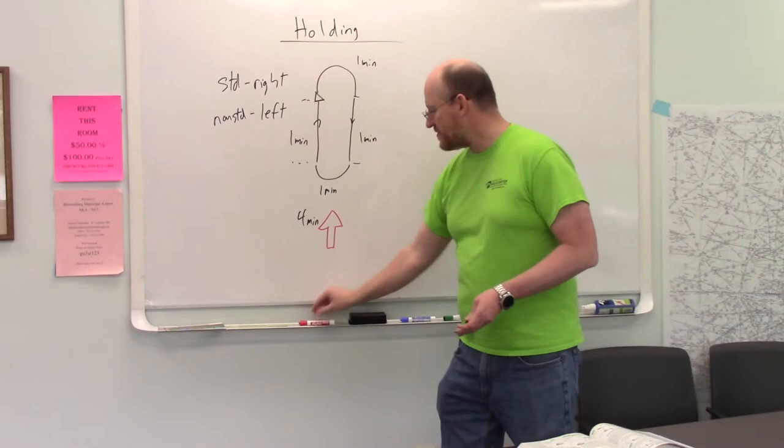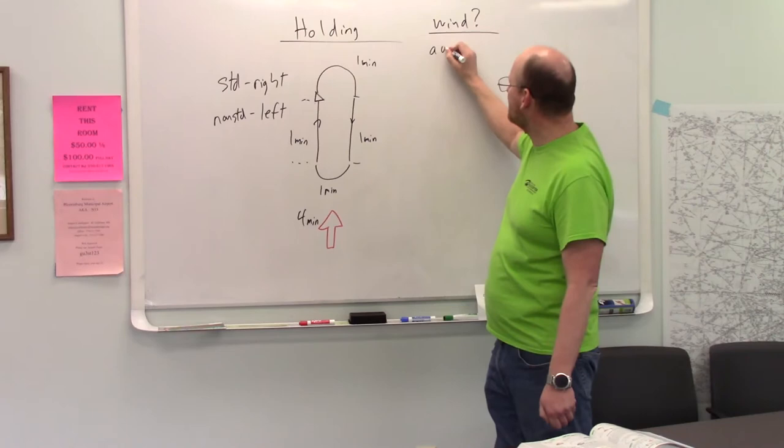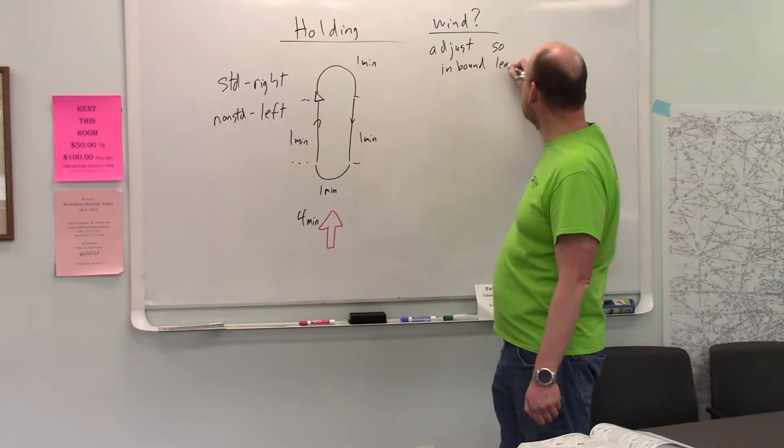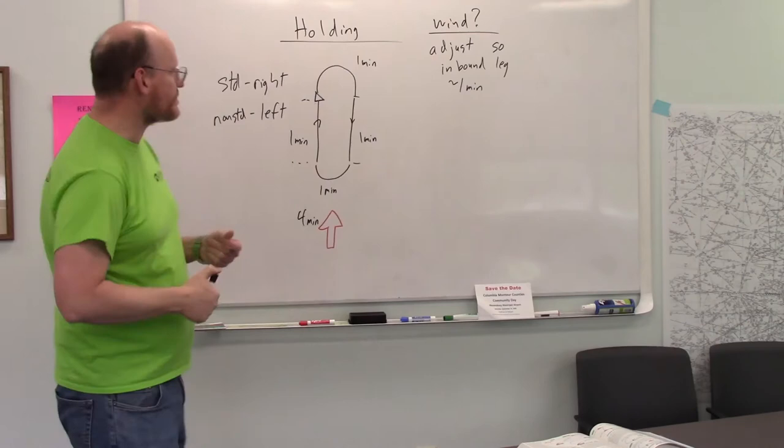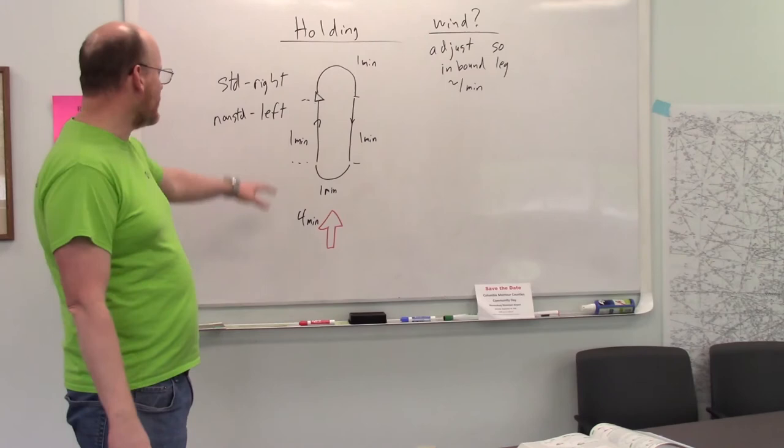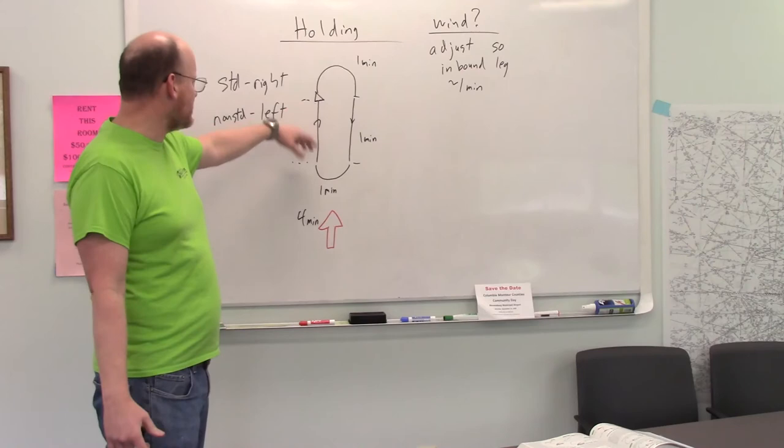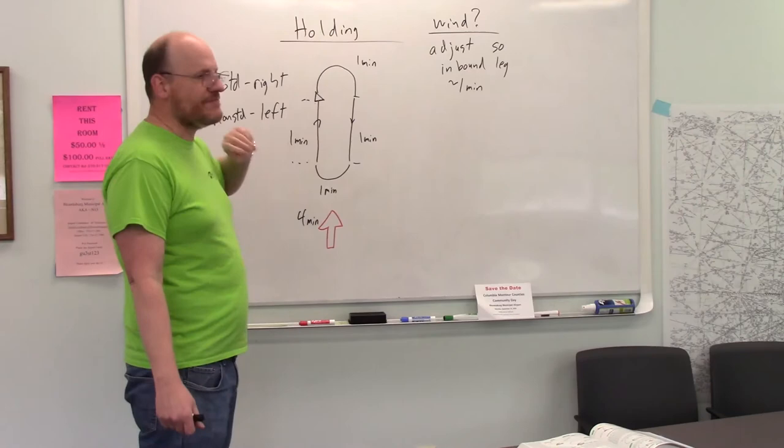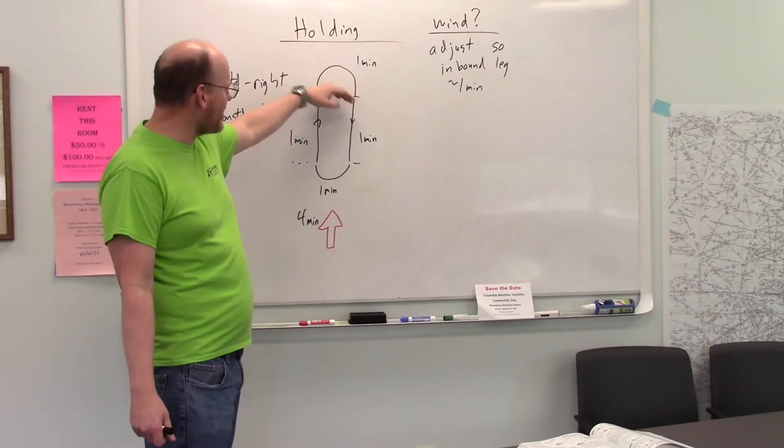So the wind is blowing this way. So whenever there's a wind, and there's always a wind, you want to adjust so the inbound leg is about a minute. Well, how do I do that? It's pretty simple. I fly in the hold. I notice what is my inbound leg. I time it. And I say, oh, well, in this case, I got a tailwind on the inbound. So I got inbound in 45 seconds. That means I have a tailwind.